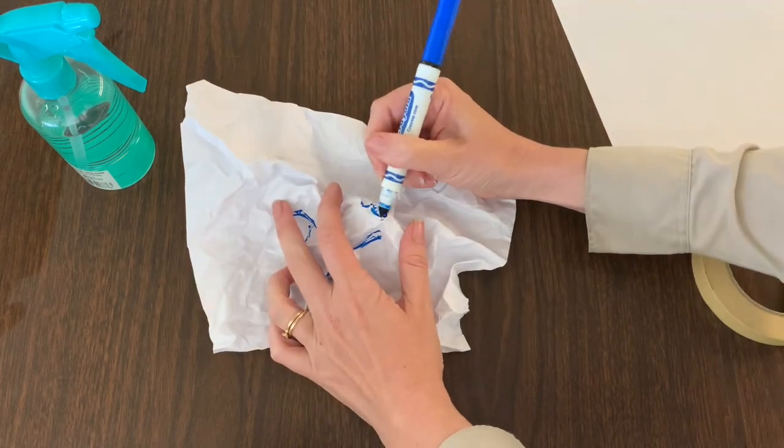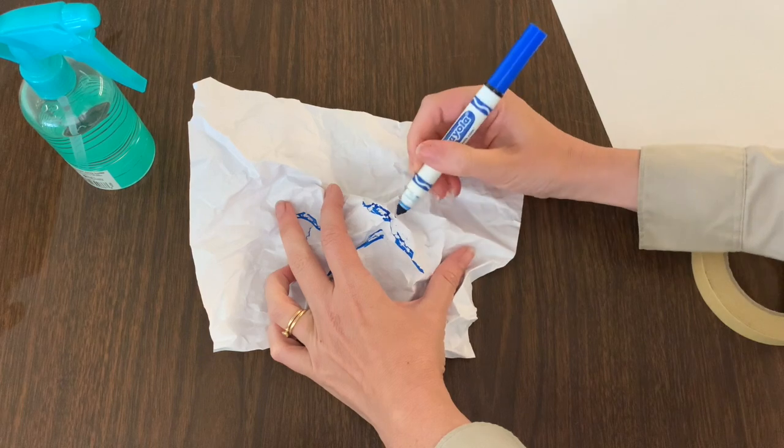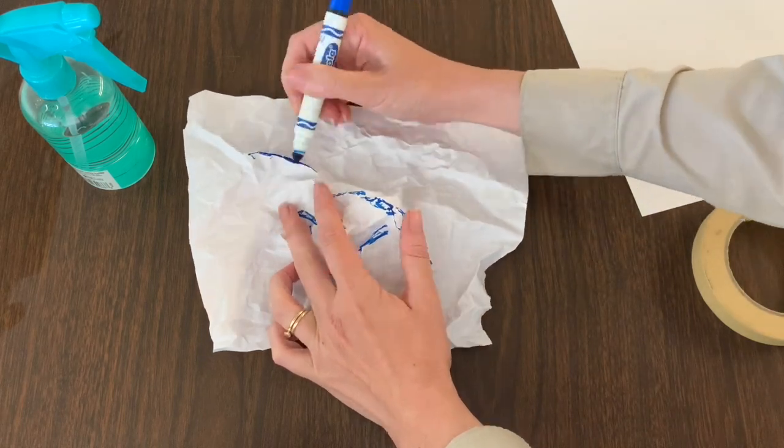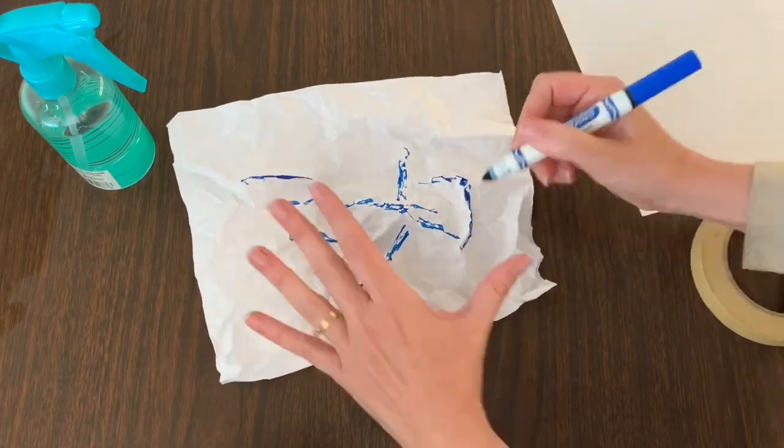Use a washable blue marker, not permanent, to color along the ridge lines of the land. Make sure to boldly color every single one of the ridge lines.